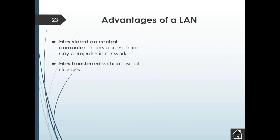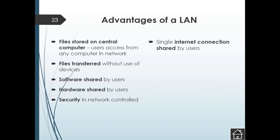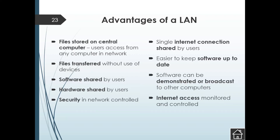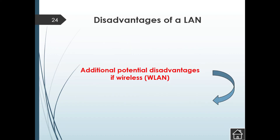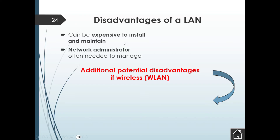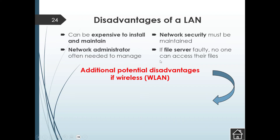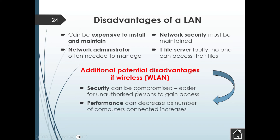Advantages of a LAN include: files are transferred without the use of devices, software and hardware can be shared, and files are stored in a central location. Disadvantages include: it is expensive to install and maintain and you need a network administrator. Additional disadvantages for wireless LANs are: security can be compromised more easily, performance can decrease, and you can get signal loss or interference.